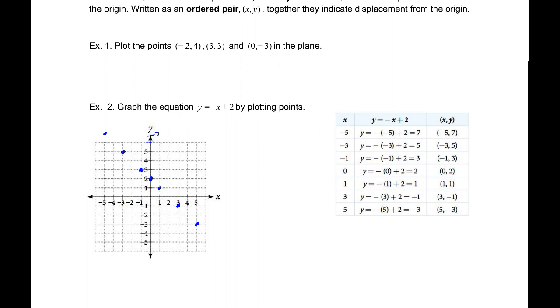So it appears that all of the points, all the coordinate points that satisfy this equation lie on this line. And so the graph of y = -x + 2 could be given by that graph, which represents all of the infinite number of points that satisfy that equation that would lie on that line.